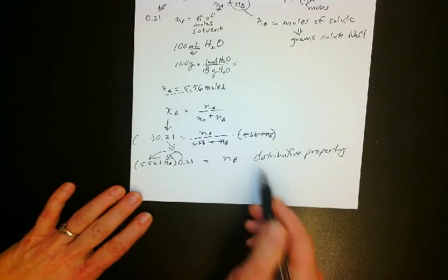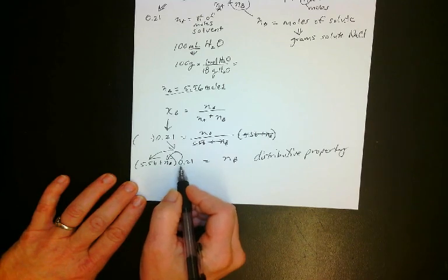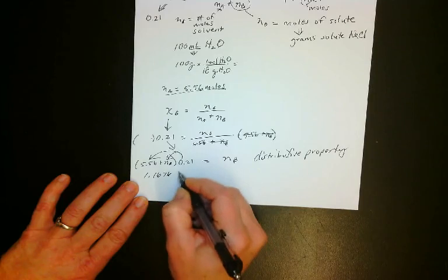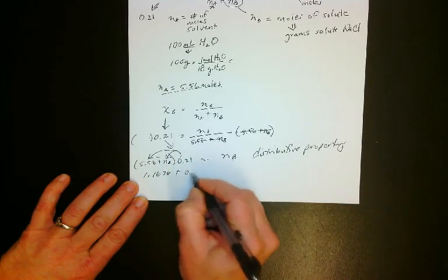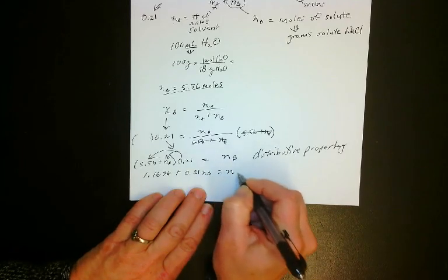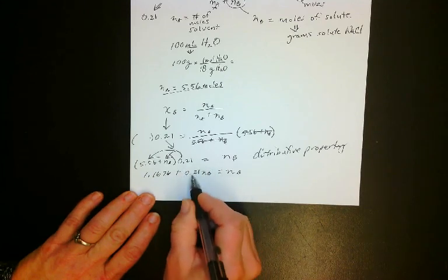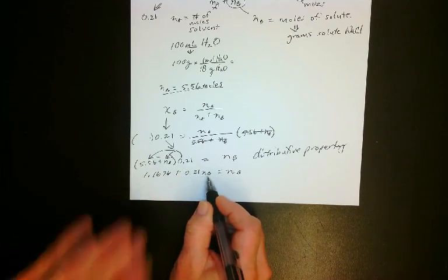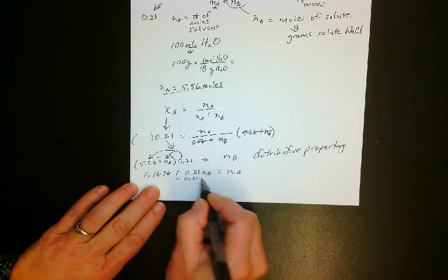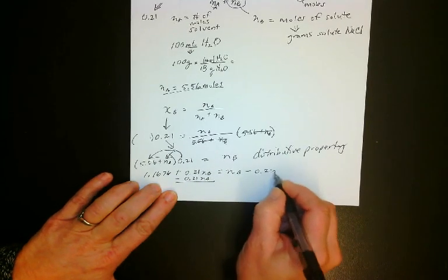That's why you had to learn that. So if I go 5.56 times 0.21, that's 1.1676 plus 0.21 times NB is 0.21NB equals NB. So I'm almost done. I need to get this NB because there's only 0.21NB, not a whole NB. I'm just going to subtract it out. And then I'm going to do that over here. Subtract by 0.21NB.